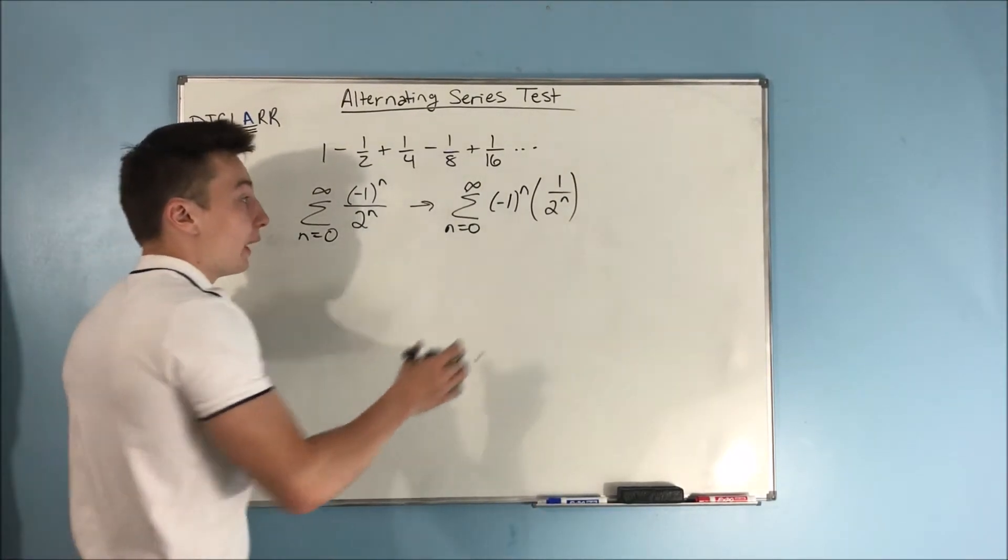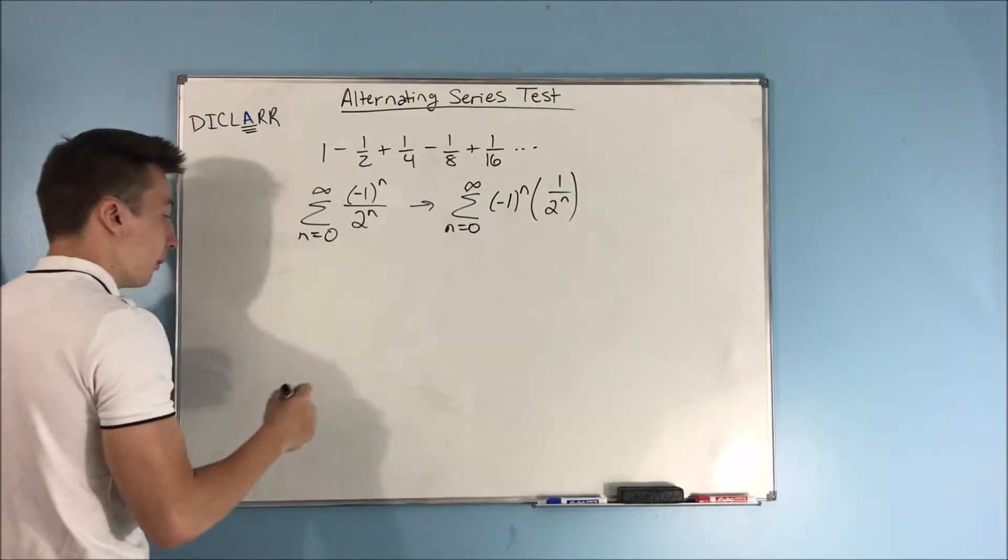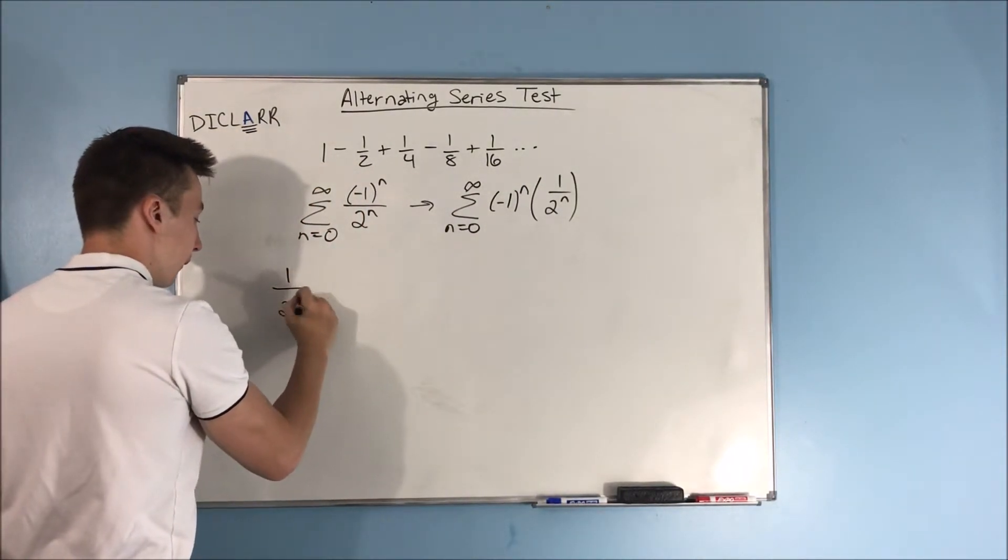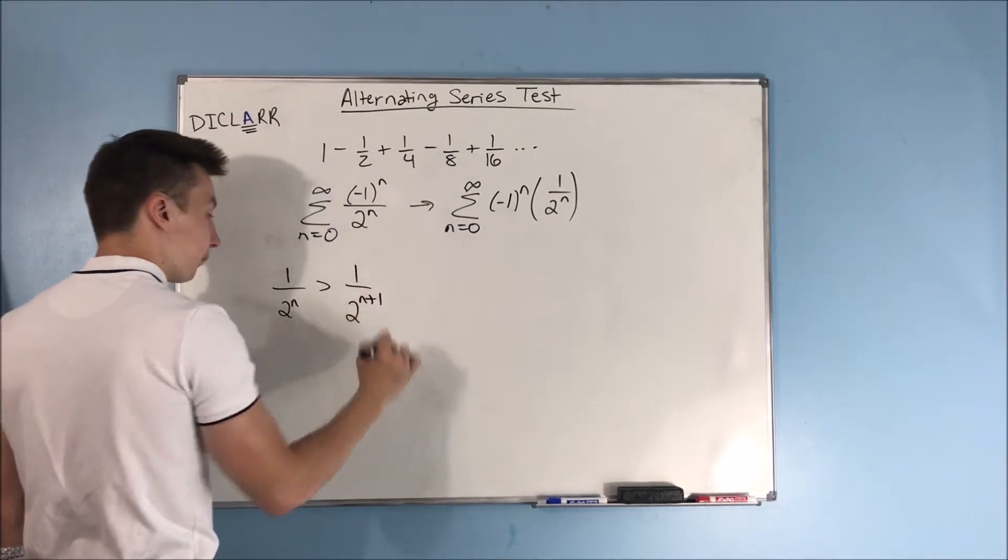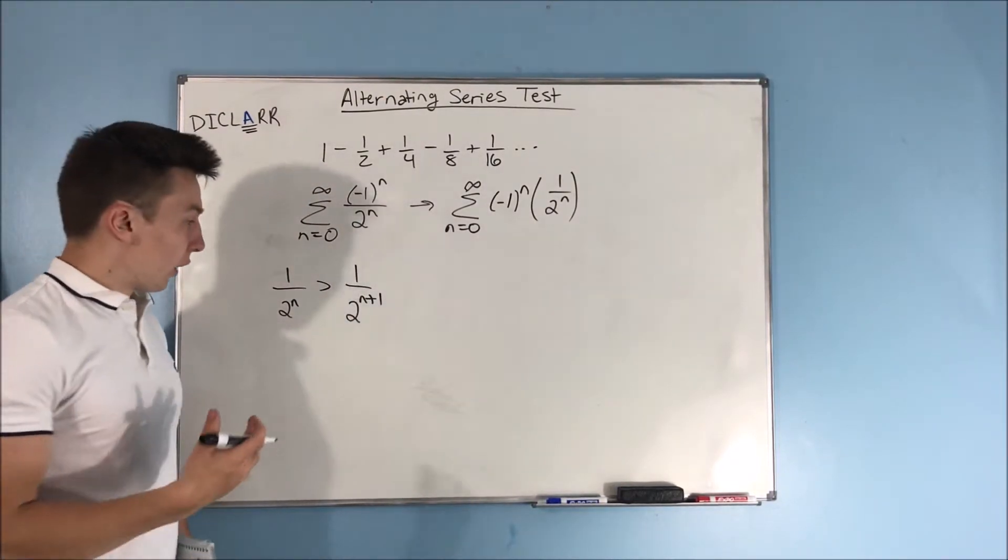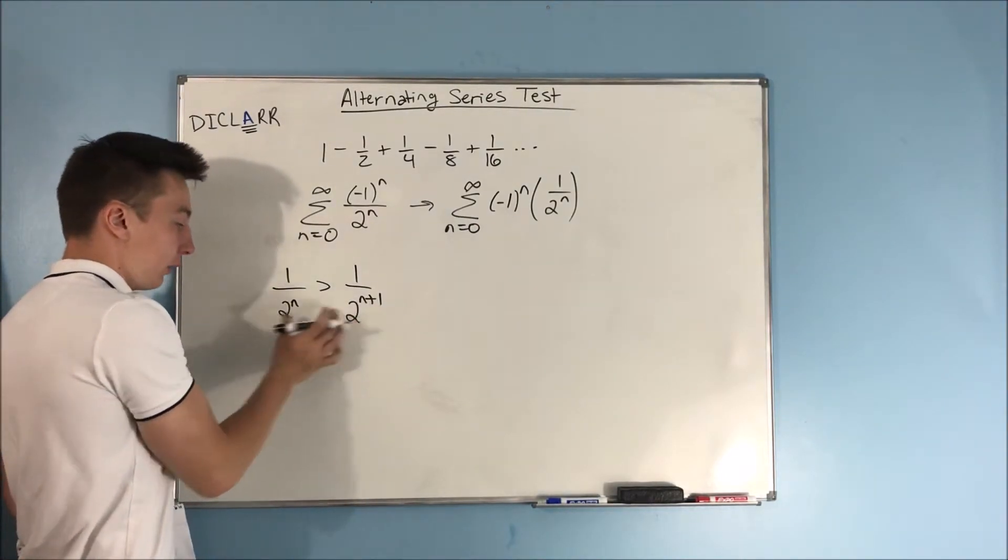So, now we have to figure out if this b sub n is going to be decreasing. So, if is 1 over 2 to the n greater than 1 over 2 to the n plus 1, right? Well, if you have a higher power here, that's a higher power in the denominator than this.